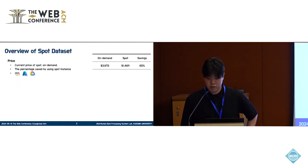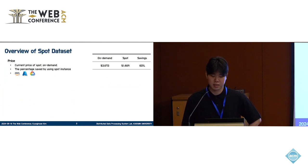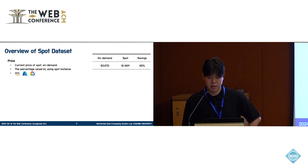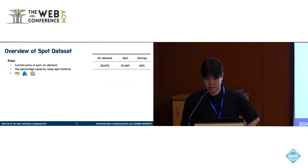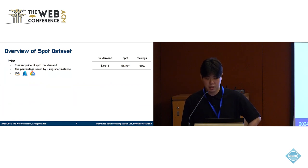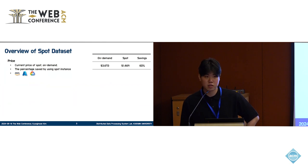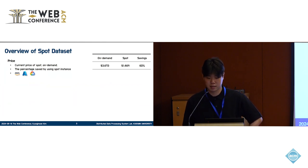To reduce the uncertainty with Spot instances, cloud vendors provide a Spot dataset. The Spot dataset includes a price dataset and an availability dataset. The price dataset consists of on-demand price, spot price, and savings. Savings indicate how much cheaper the spot price is compared to the on-demand price. AWS, Azure, and GCP all provide the Spot dataset.